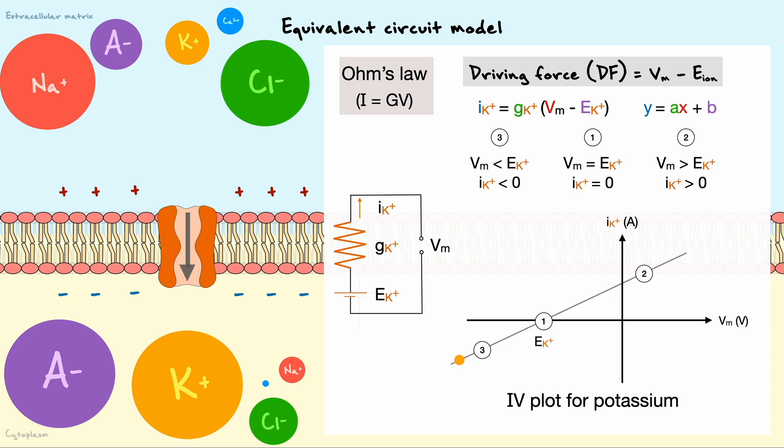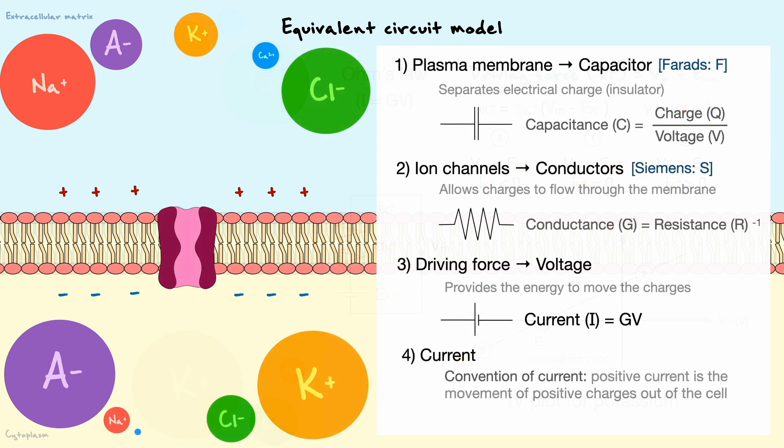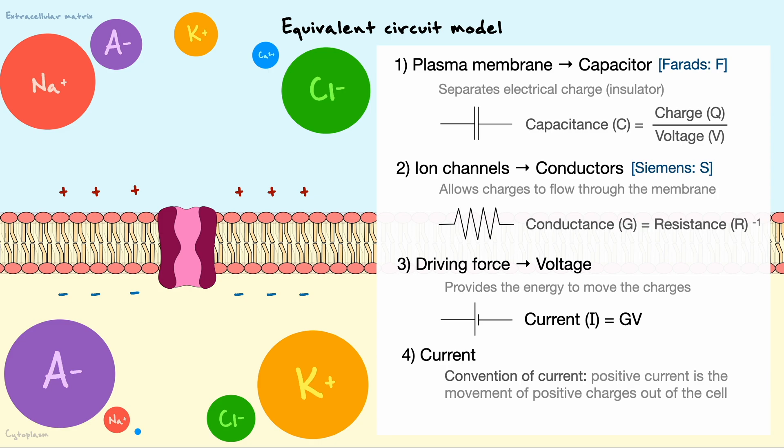For terminology's sake, you might sometimes see the equilibrium potential be named as the reversal potential because it is the value beyond which the current direction reverses. Back to this figure, we now have all the basic analogues to properly compare the neuron to a circuit. I just want to mention that the voltage is in units of volts and that the current is in units of amperes.